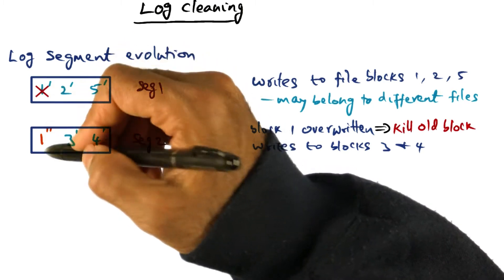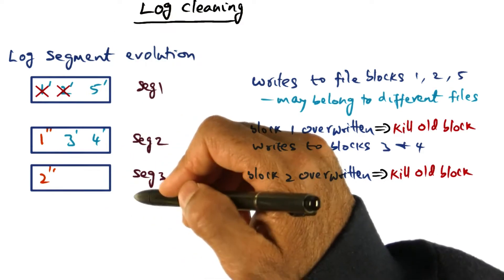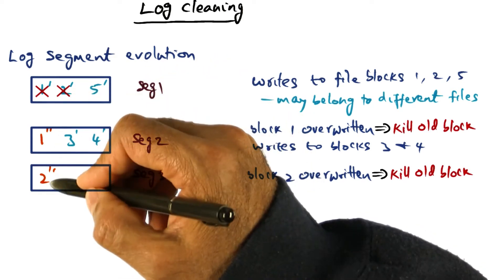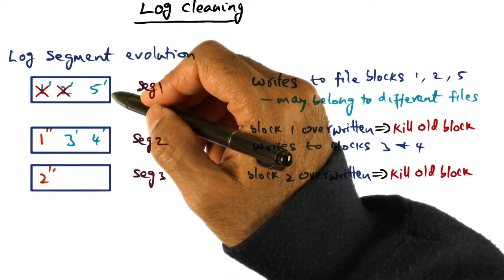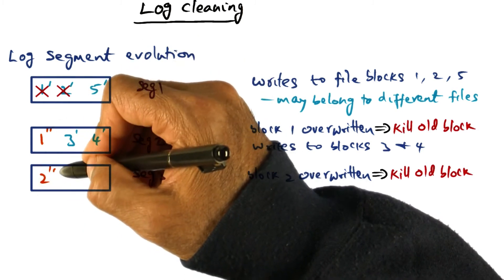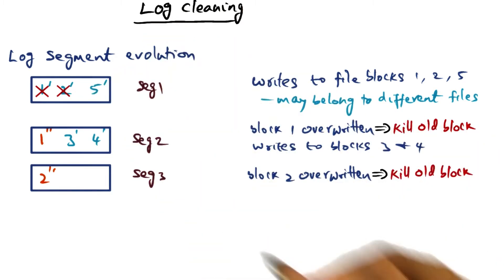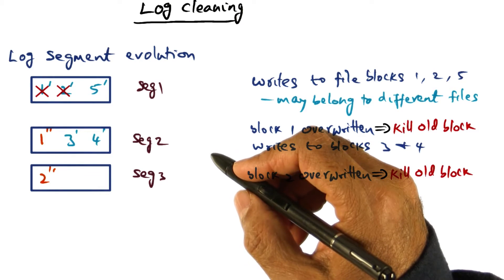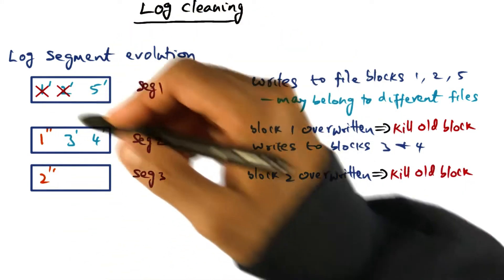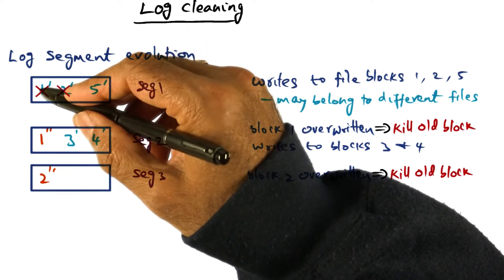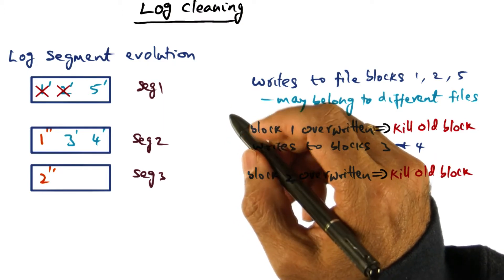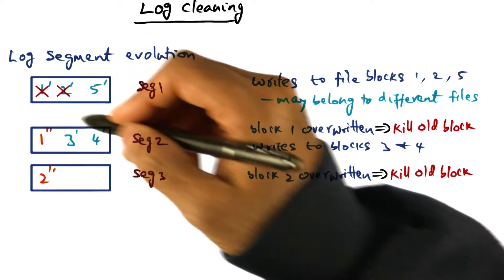One prime is no longer relevant because it has been overwritten by one double prime. Activities continue on the client, and a third segment is created containing two double prime — block two is overwritten with new contents. When this happens, the file system creates another hole by nuking two prime to indicate it is not relevant anymore, since there is a more recent version in segment three. As client activities progress across the entire distributed system, we create many segments with holes in them, and this is what log cleaning is all about — cleaning up the disk and getting rid of unnecessary junk.